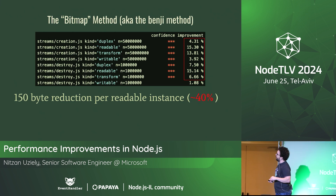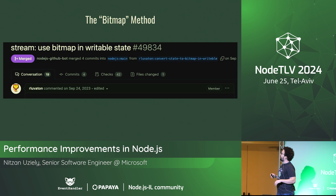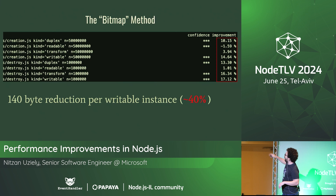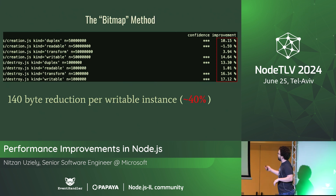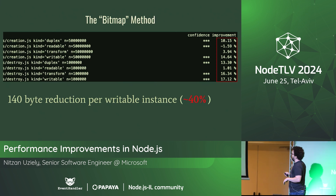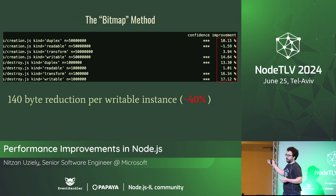The same technique was then applied to writable streams, getting 10 to 17% performance improvement and about 40% memory reduction for writable instances. When you have a server with a lot of HTTP connections and streams, this really impacts performance.